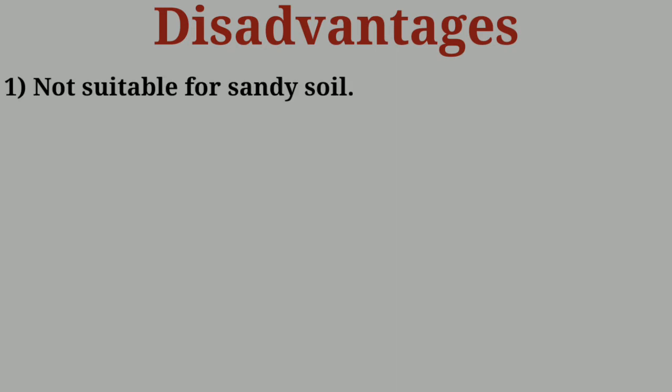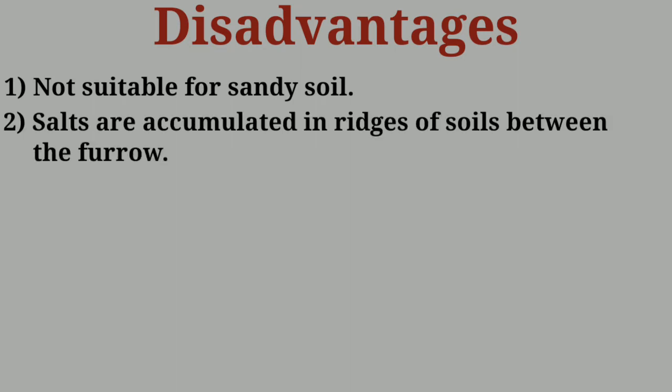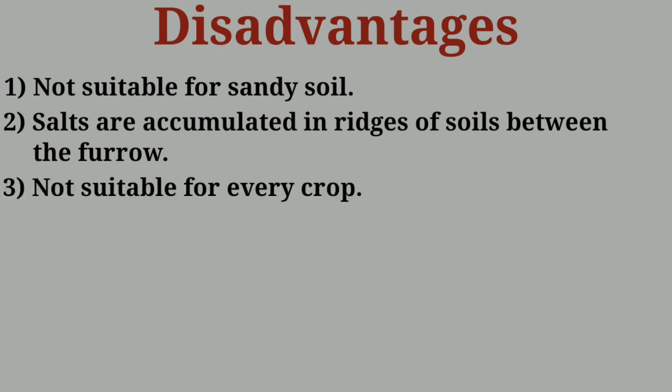What are the disadvantages? Furrow irrigation is not suitable for sandy soil. As discussed, it is suitable when soil texture is fine. Another disadvantage is that salts accumulate in the ridges of soil between the furrows and the roots. The salt deposits in the ridges can affect crop growth, meaning not every crop is suitable for furrow irrigation — only those crops that are planted in a line are appropriate.